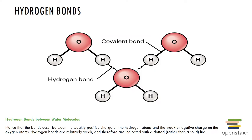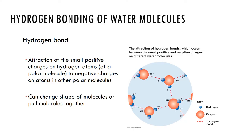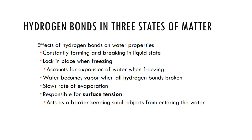A hydrogen bond is the attraction of the positive charge on hydrogen to the negative charge on oxygen. Hydrogen bonds are constantly forming and breaking when water is in its liquid form. However, when frozen, they lock in place — accounting for the expansion of water upon freezing. When water goes to the vaporous state, all hydrogen bonds are broken, which slows the rate of evaporation and also contributes to the surface tension property we see with water.